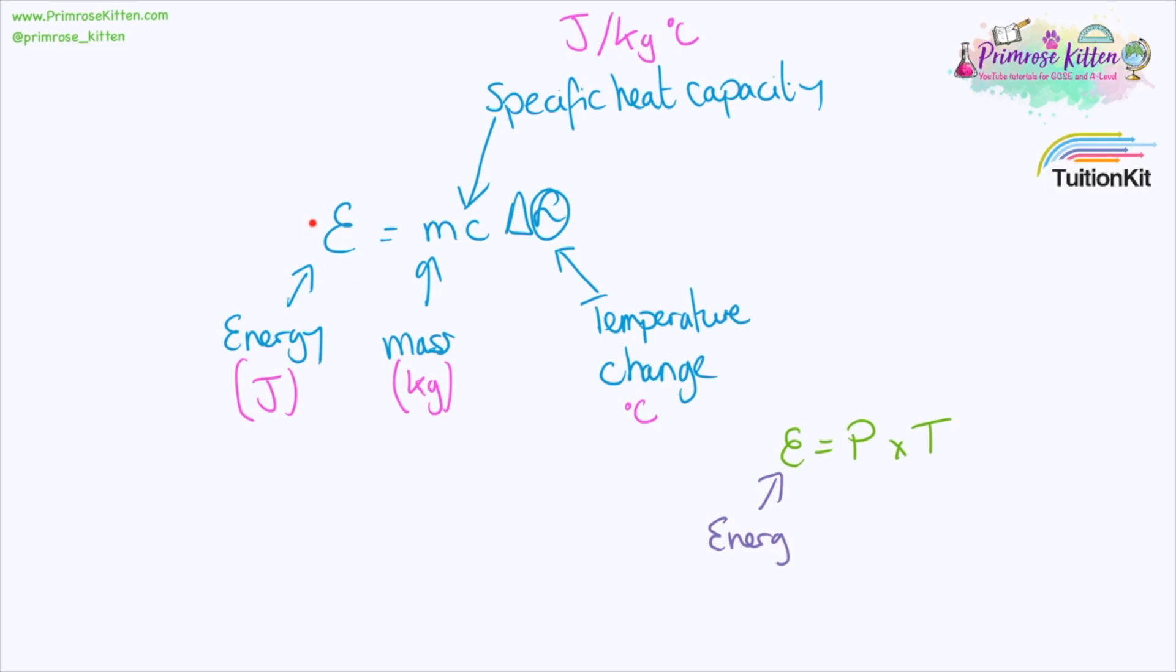Now if you have a joule meter you can measure energy directly but we don't. So we're going to be using energy in joules is equal to power in watts times time in seconds. To find the power which is measured in watts we are going to use our readings from the ammeter for current and our readings for potential difference from the voltmeter.